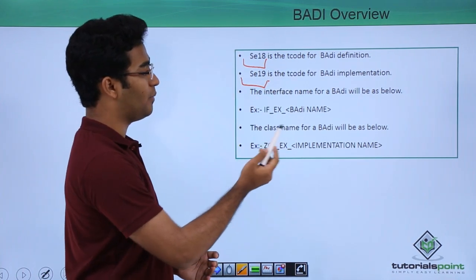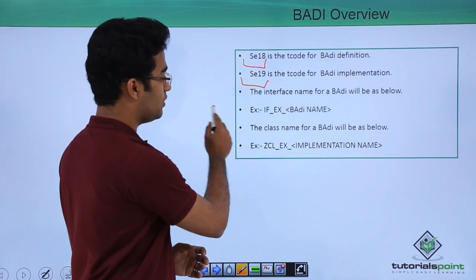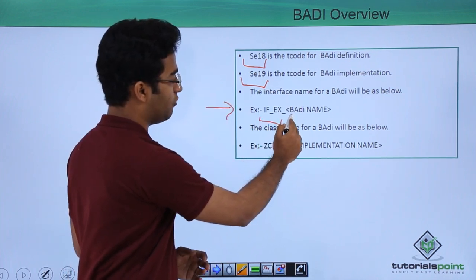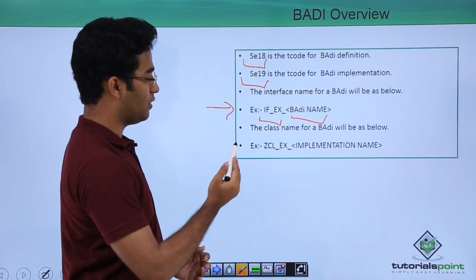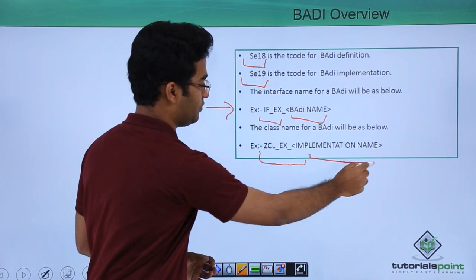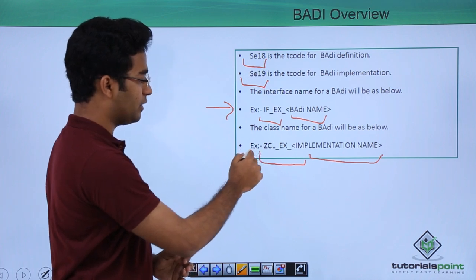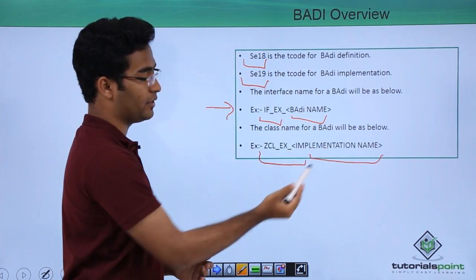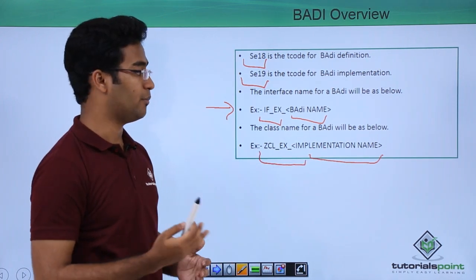The interface name for BADI would be the syntax here. We have to provide our BADI name, and the class name interface would be like this: ZCL_EX_<implementation name>. Here we can provide any implementation name.